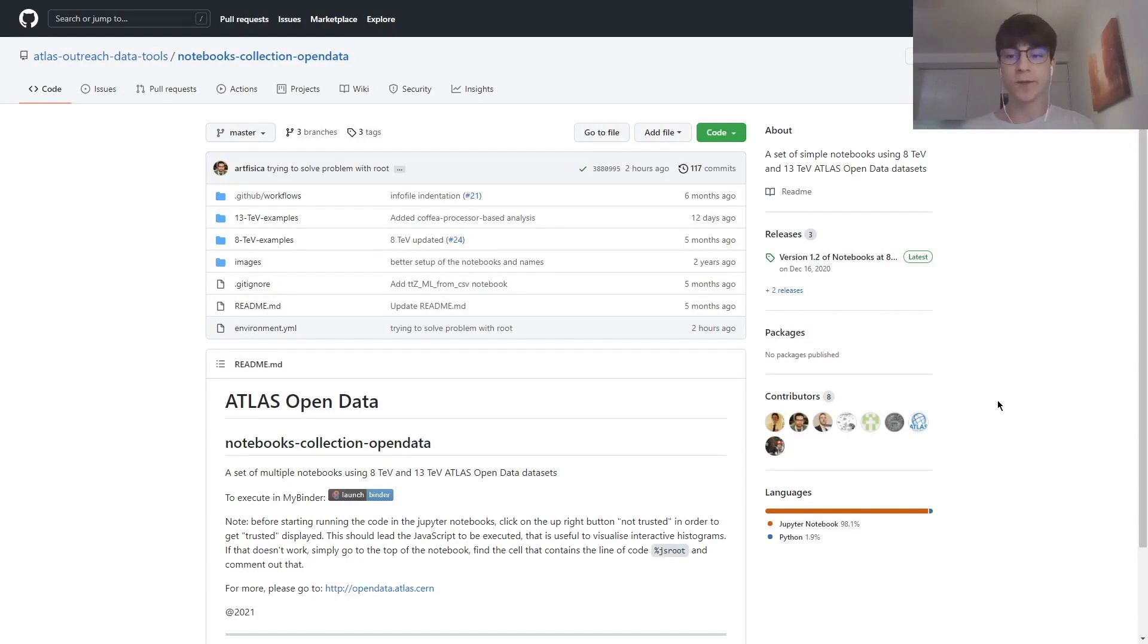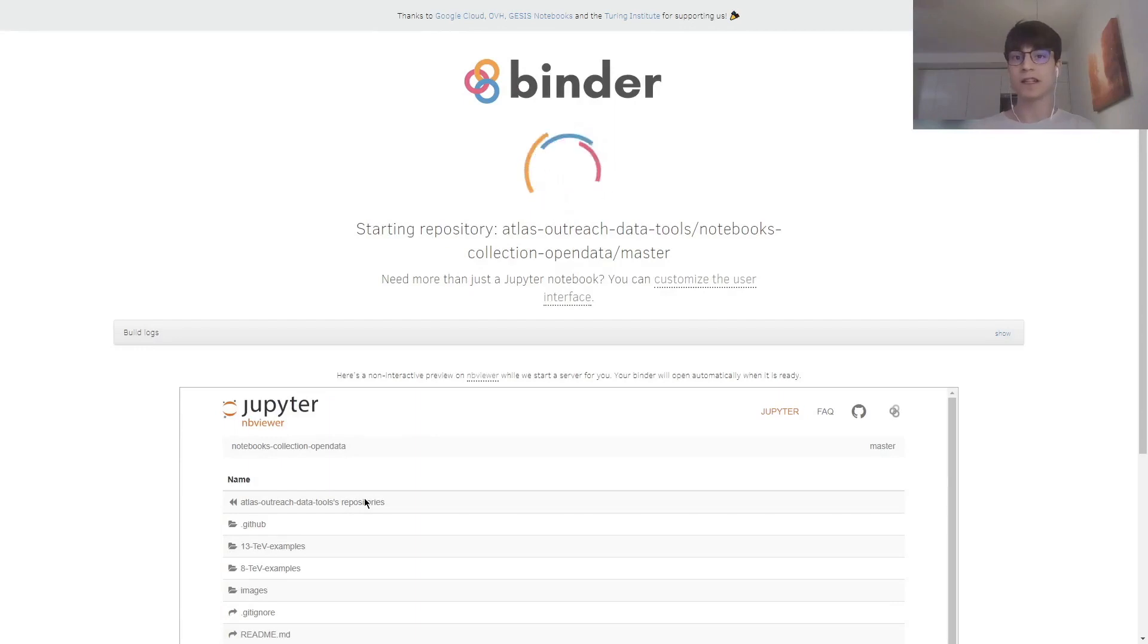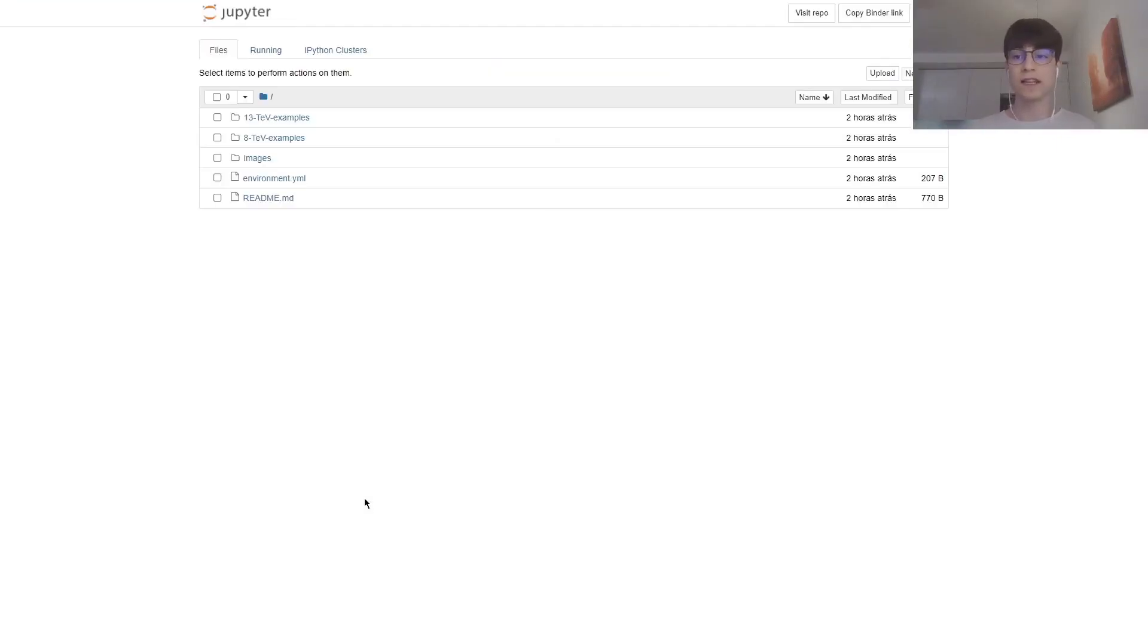After clicking the link in the description, we will go into the readme file and click on launch Binder. Binder is a virtual machine that allows you to work with the notebook without having to download it. For now, I'm going to wait for it to load. Once it loads, you're going to see this screen, which is the repository of the ATLAS Open Data notebooks.